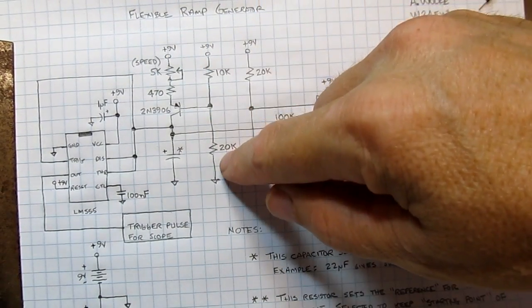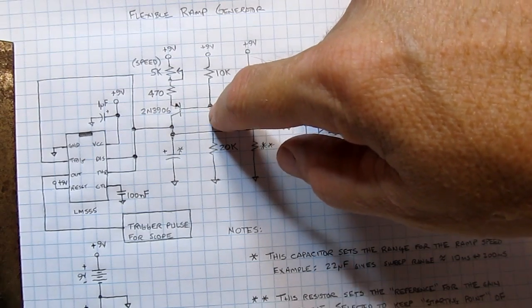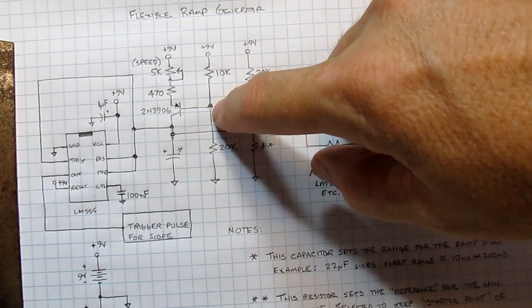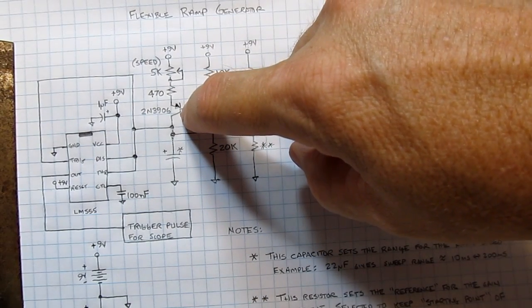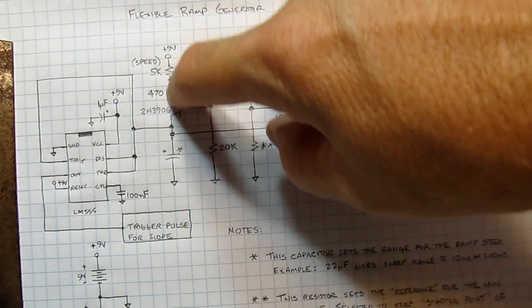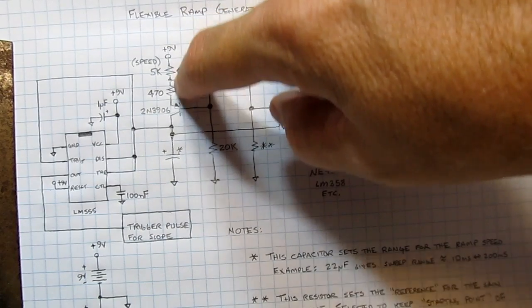These two resistors set up a bias voltage here from the 9-volt supply of about 6 volts, biasing the base of this PNP transistor. And since that's a fixed voltage, we're essentially putting a fixed voltage across these resistors here.